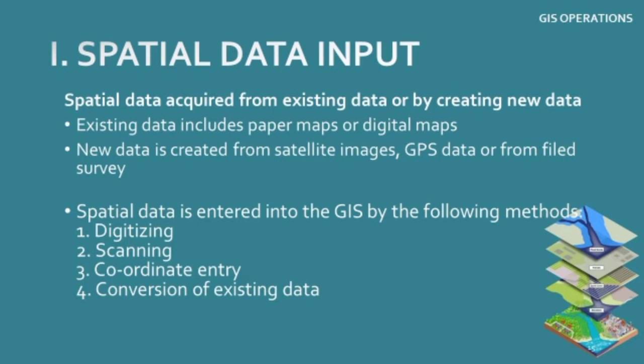Existing data includes paper maps or digital maps. New data is created from satellite images, GPS data or field surveys. For India or an Australian map, you will have digital maps from many sources or paper maps. For a particular area with no defined boundary, you may rely on remote sensing maps, GPS maps or field surveys. Data is entered into GIS by the following methods: digitizing, scanning, coordinate entry and conversion of existing data.